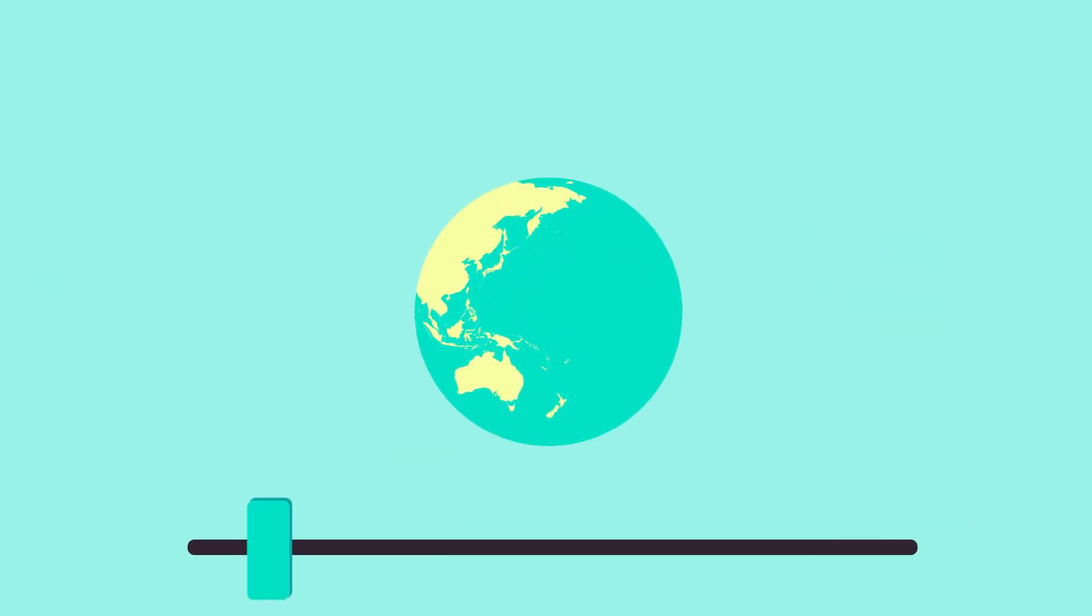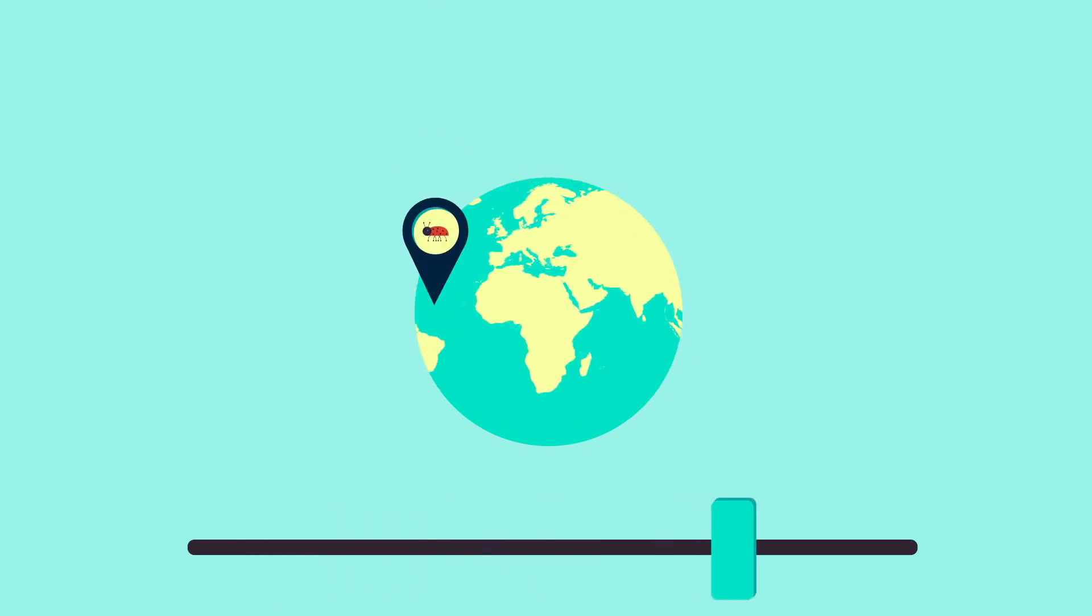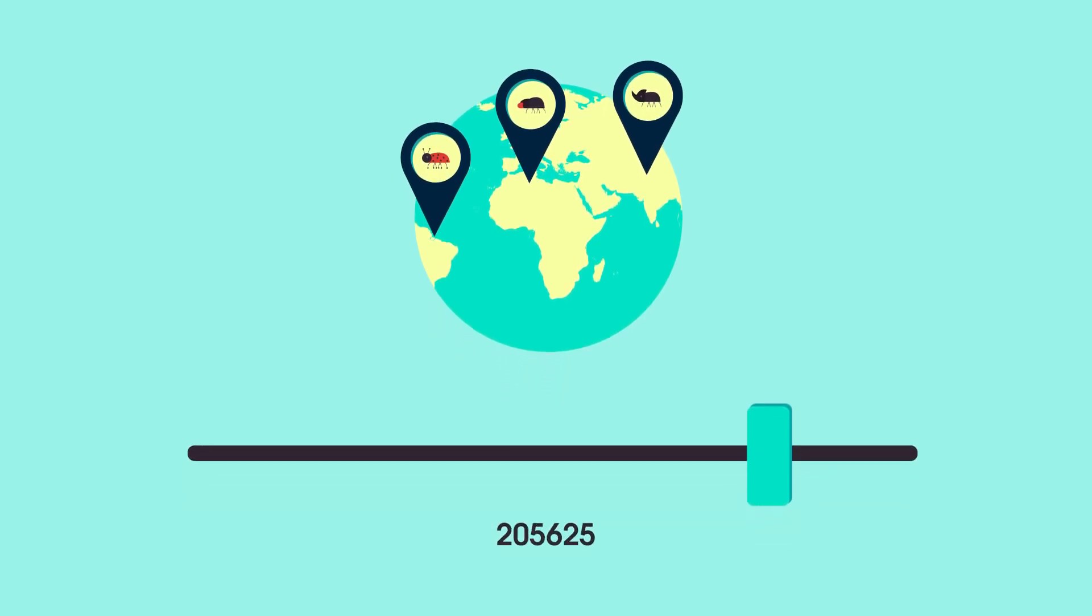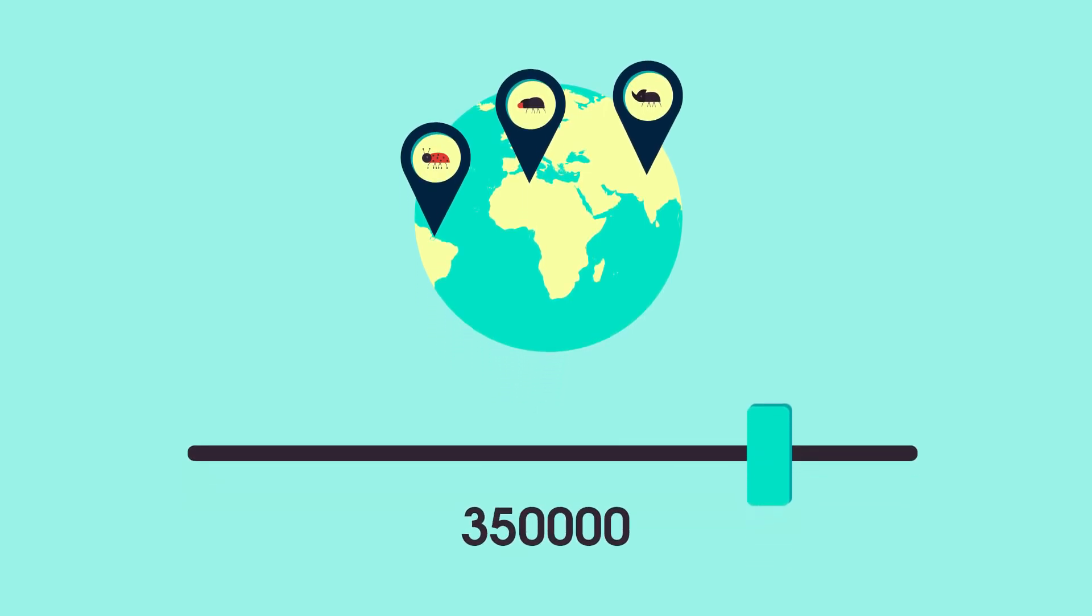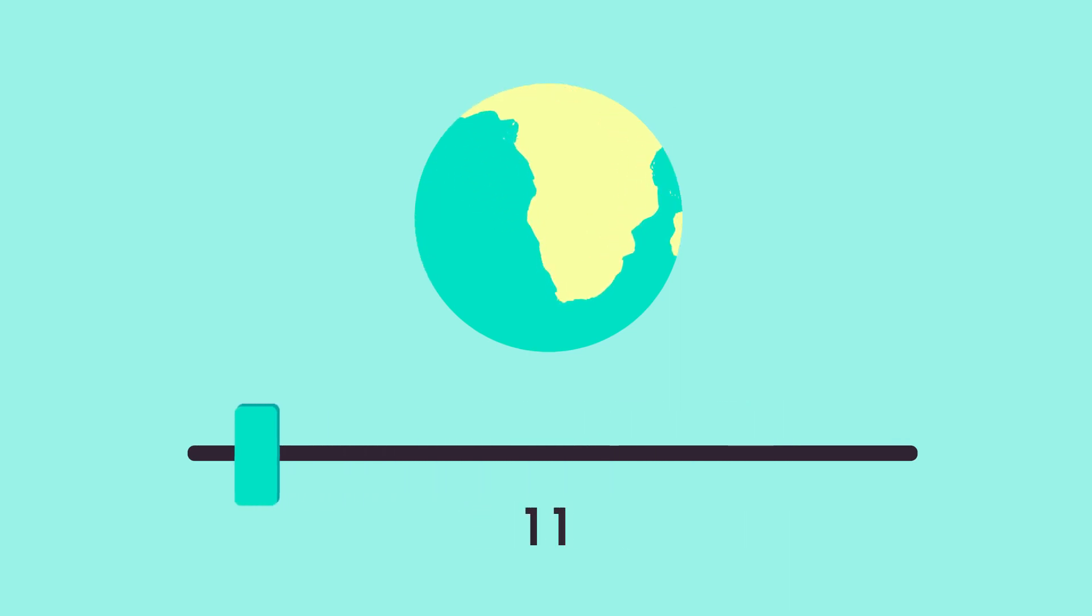For example, if you wanted to measure the biodiversity of beetles on a global scale, you would find there are over 350,000 known species of beetle on the planet. However, if you wanted to measure the biodiversity of beetles locally, you might find only up to 10 or 20 species.